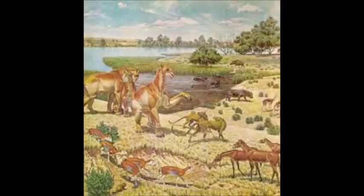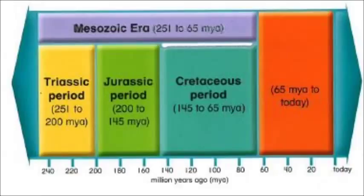The Mesozoic Era. Dinosaurs lived millions and millions of years ago. The time that the dinosaurs lived is called the Mesozoic Era. The Mesozoic Era went from 250 million years ago to 65 million years ago.